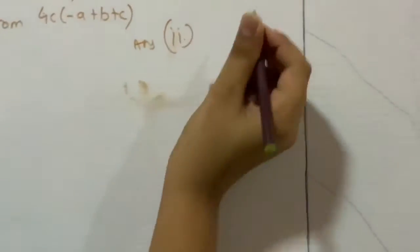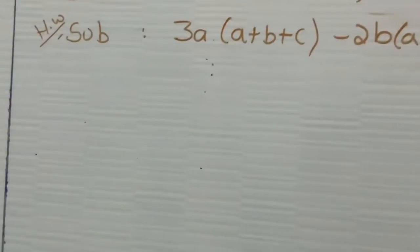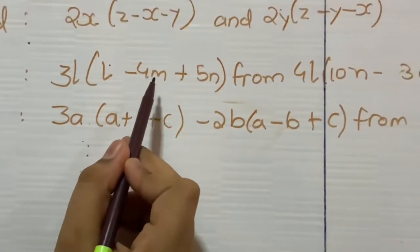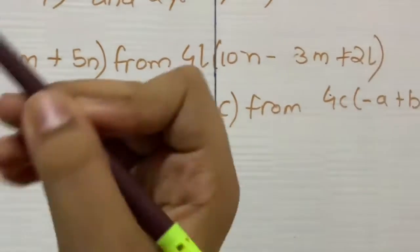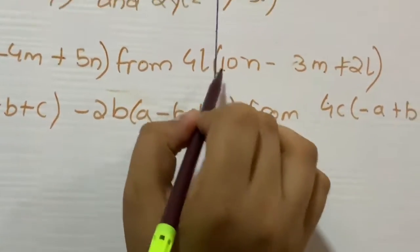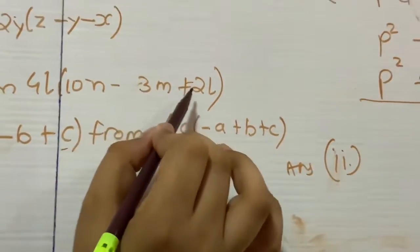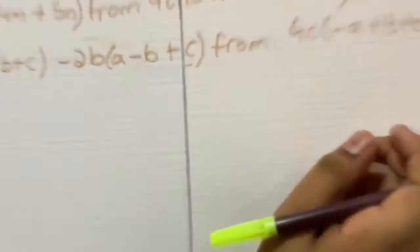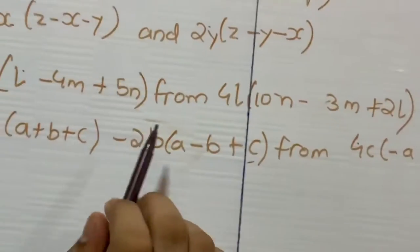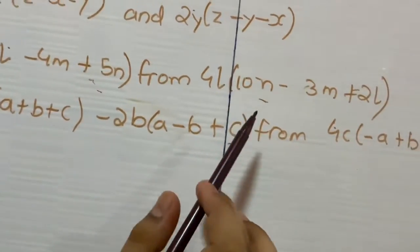Now in subtraction also there are two sums. Now I will do one sum, and you will easily understand the second sum. So now the first sum is 3L multiplied by L minus 4M plus 5N.